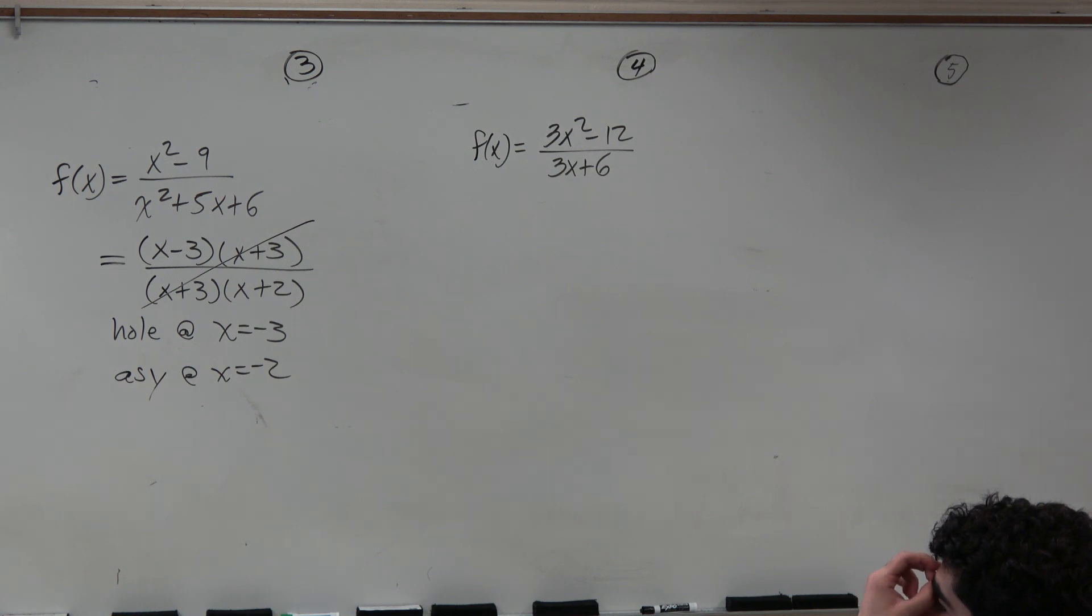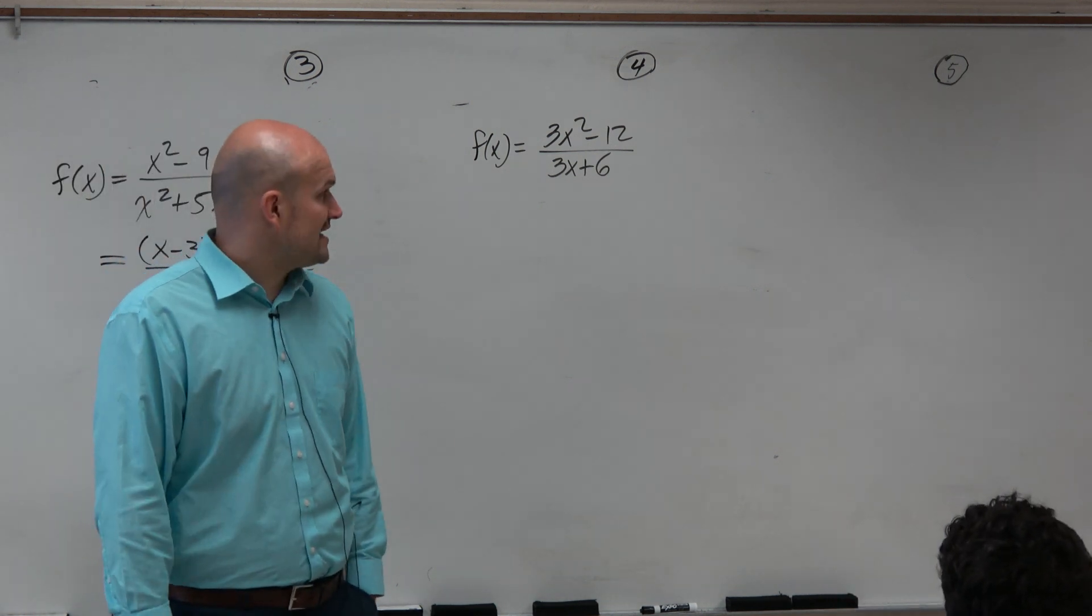In this example, we have 3x² - 12 divided by 3x + 6. And again, guys, we want to look into factoring.